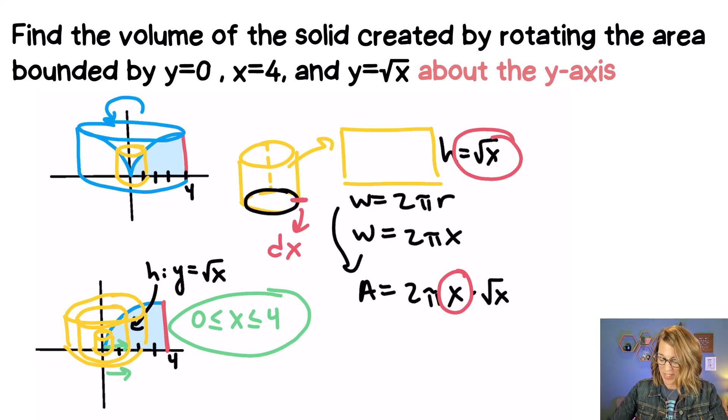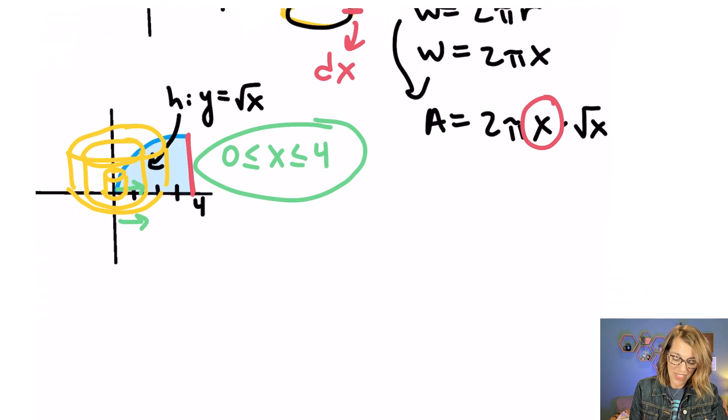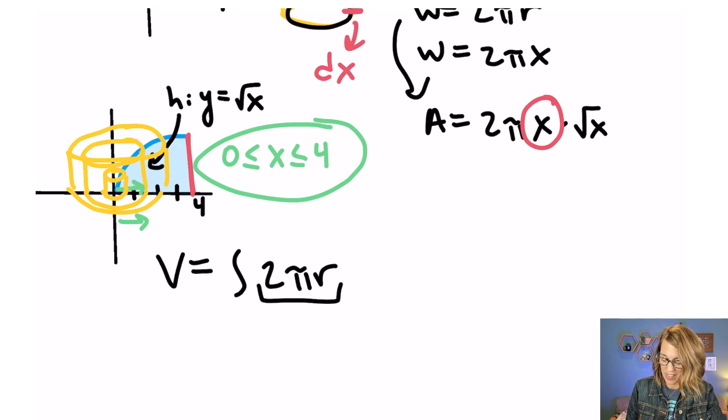Let's go ahead and put our formula together. So this is what our formula is going to look like. Our volume is equal to the sum of all of the areas of those cylinders with their thickness. So it's going to be area times thickness. That's going to be 2πr, that's my width, times my height times either dy or dx. In our case it's going to be a dx.